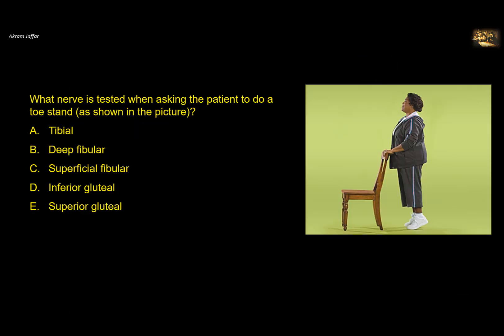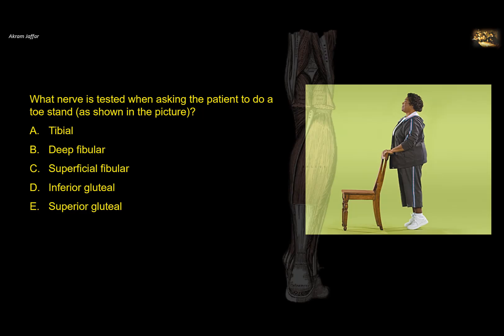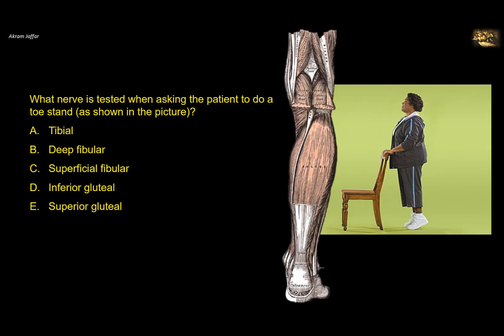What nerve is tested when asking the patient to do a toe stand, as shown in the picture? In this case we are asking the patient to do plantar flexion, using the muscles of the posterior compartment of the leg. These muscles are supplied by the tibial nerve, so the nerve tested is the tibial nerve.